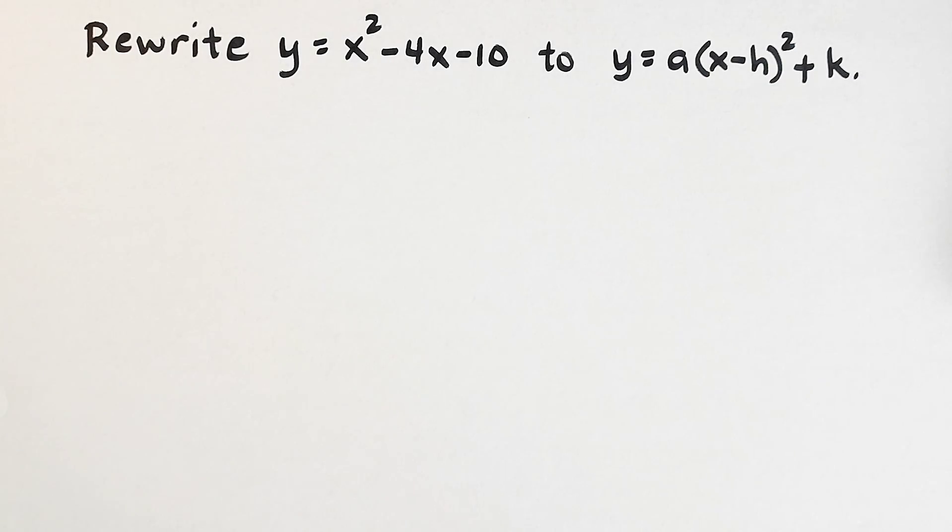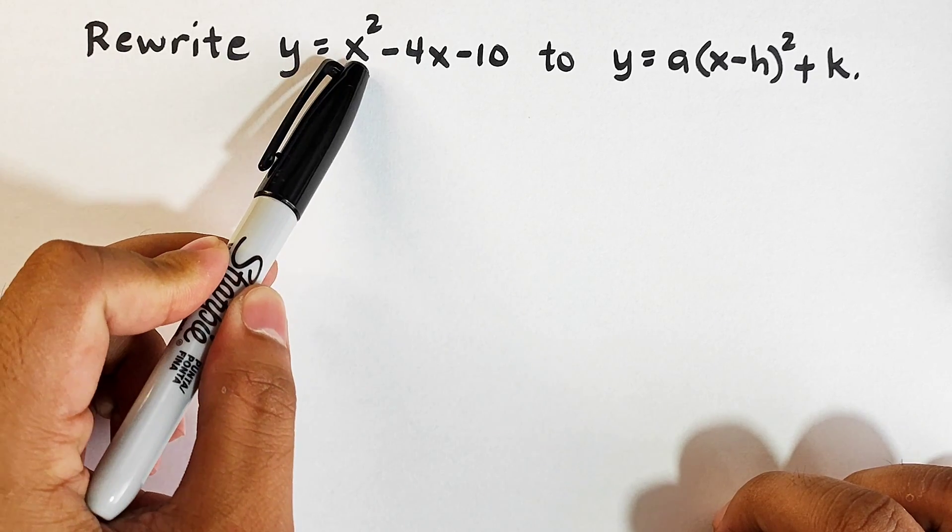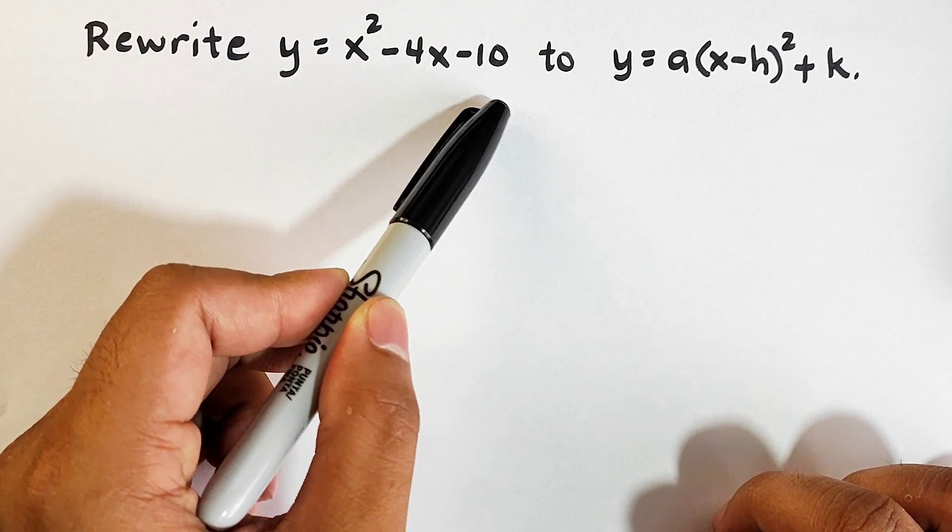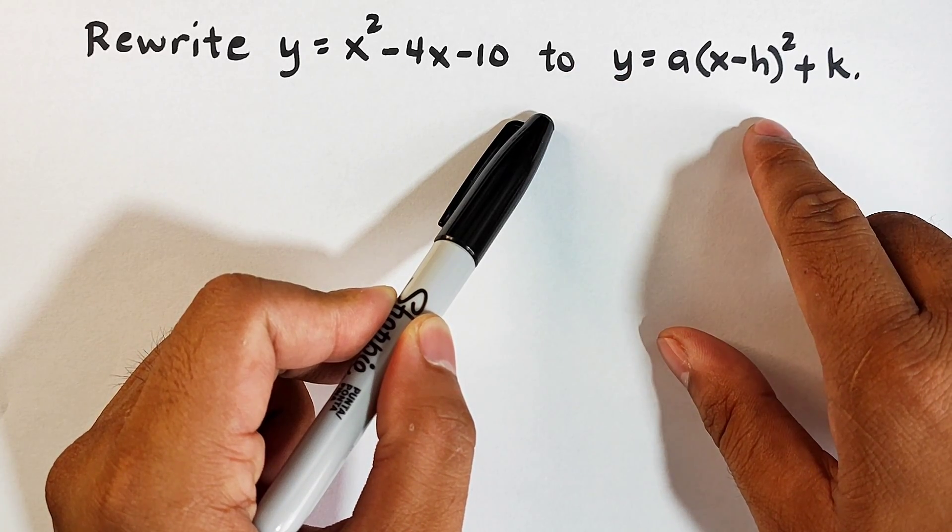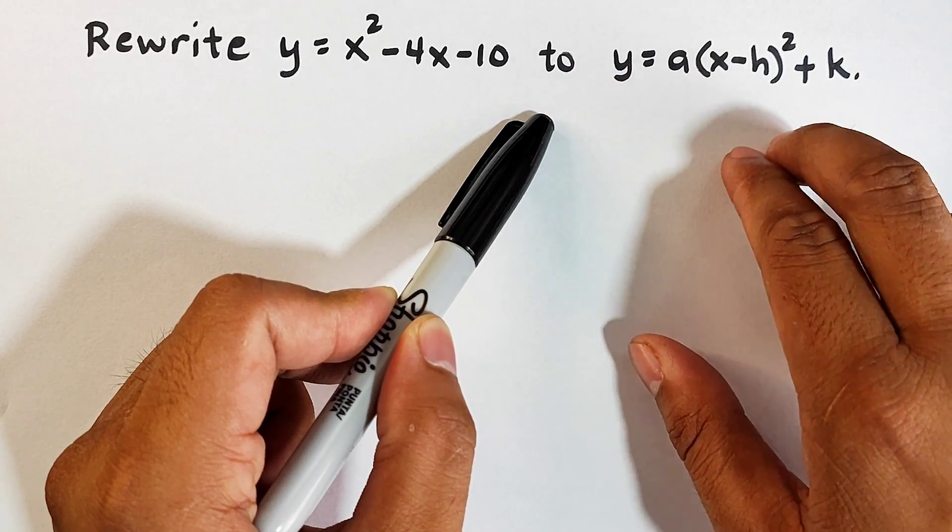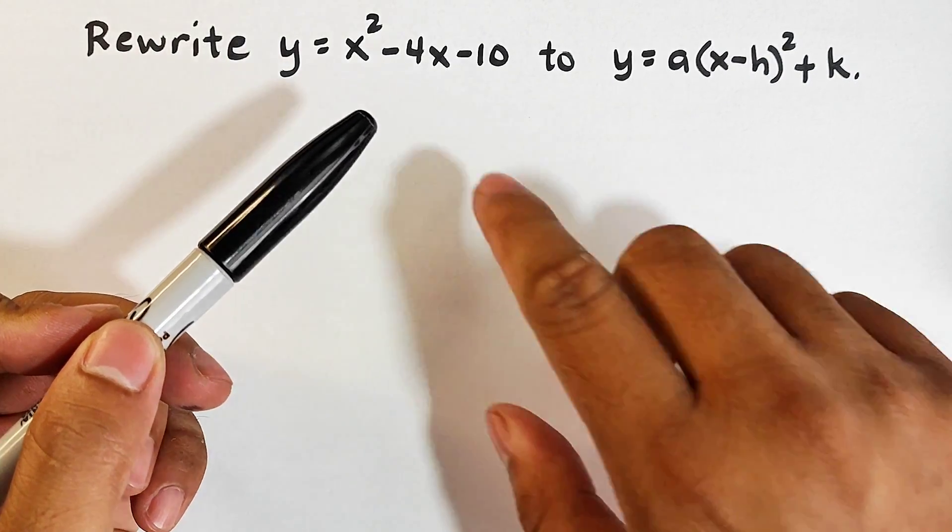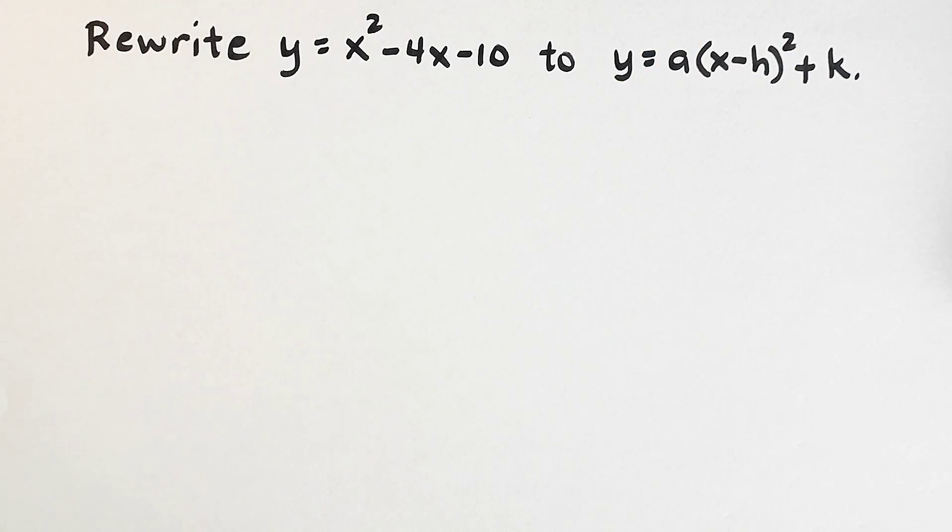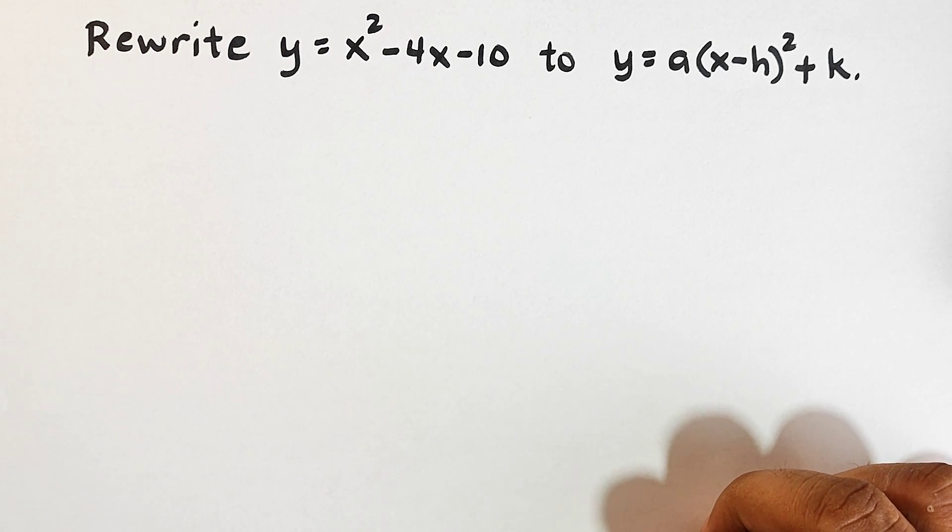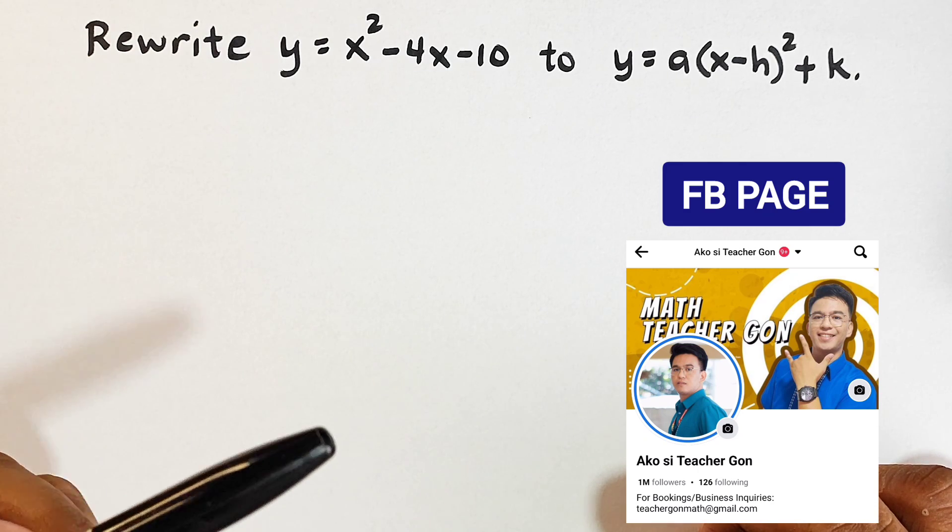So what we have here is a given example wherein we are asked to write y equals x squared minus 4x minus 10 to the form y equals a times x minus h squared plus k, and this is the vertex form. Currently, this given quadratic function is in general form and we will convert this. Now, what are the things that you need to remember in this kind of situation? You need to remember or you need to master the completing the square, kasi yun yung pinaka-important na process na kailangan natin gawin dito.